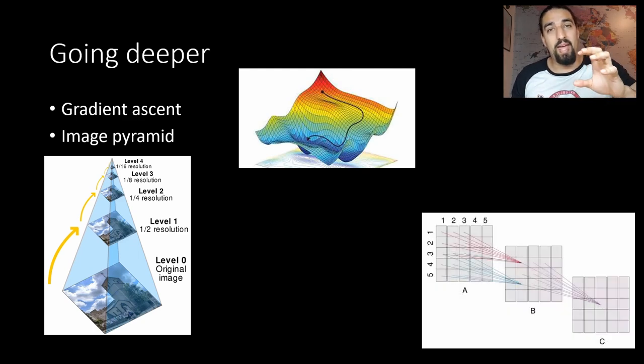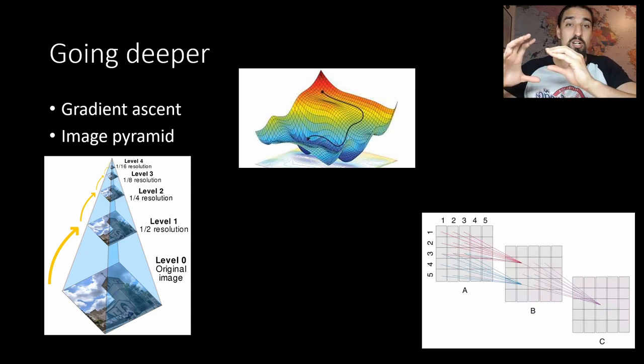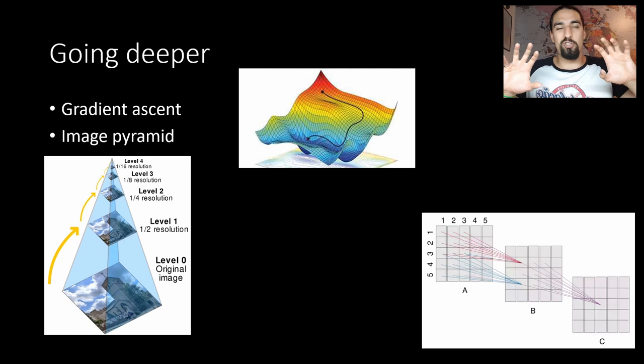Now why do we do that? There is something called receptive field of the network. When you feed all of those images from the image pyramid with different sizes to the network you will see different features. Some will be more fine grain, some will be like coarser features and combining all of those across the layers you'll get a really nice looking DeepDream image.